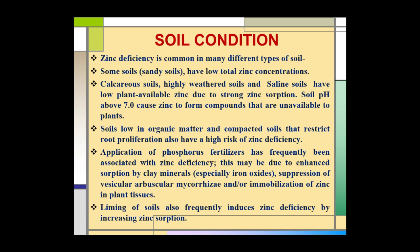Different soil conditions affect the availability of zinc to plants. Zinc deficiency is common in many different types of soil. Sandy soils have a low total zinc concentration, while calcareous soils, highly weathered soils, and saline soils have low plant-available zinc due to stronger zinc sorption. Soil pH above 7 causes zinc to form compounds that are unavailable to plants. Soils low in organic matter and compacted soils that restrict root proliferation also have a high risk of zinc deficiency.